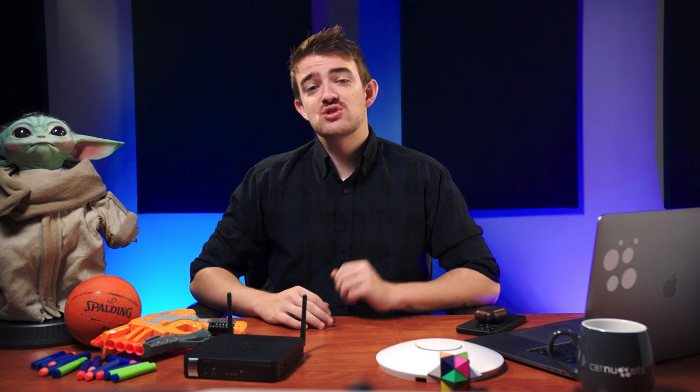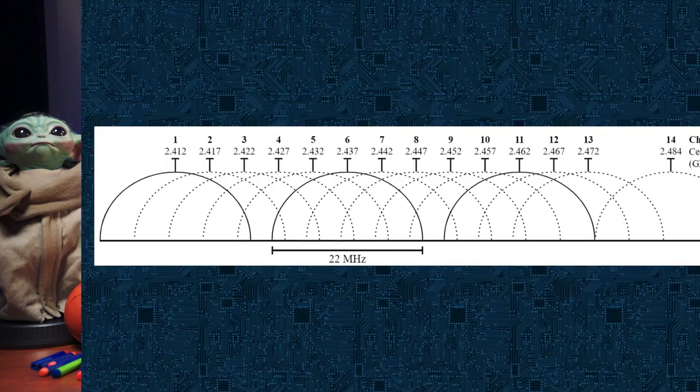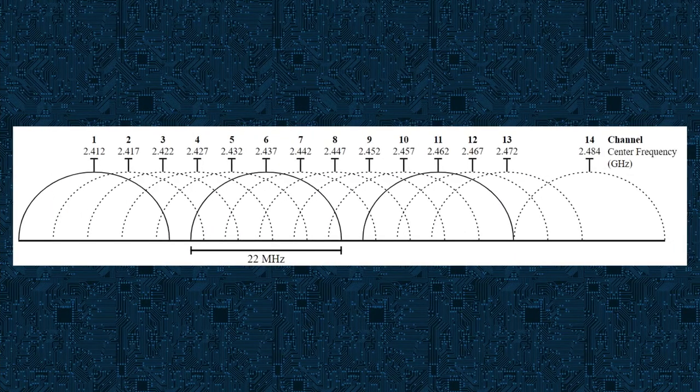Understanding Wi-Fi bands is vital to understanding when to use 20 MHz vs. 40 MHz vs. 80 MHz channel widths. It's also an important prerequisite to understanding Wi-Fi channels and channel width.